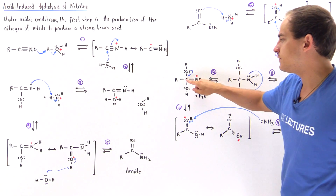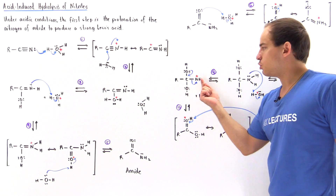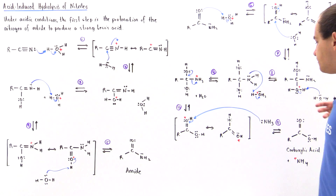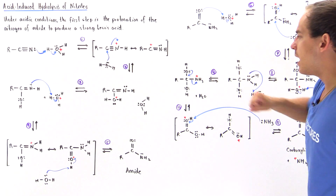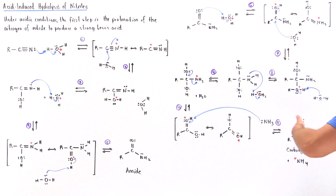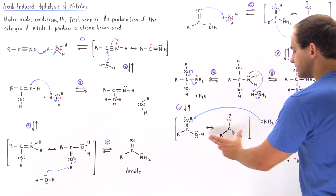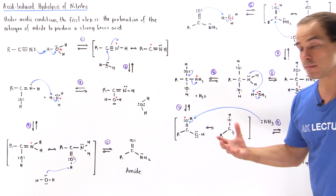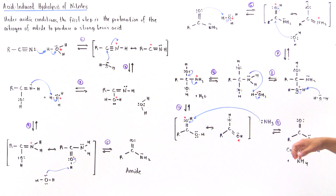This bond breaks and NH3 — ammonia — leaves the molecule, and we form a resonance-stabilized intermediate. In the final step, this intermediate is deprotonated on our oxygen, as the ammonia acts as the base deprotonating the H and forming the final product — our carboxylic acid — as well as the positively charged ammonium.